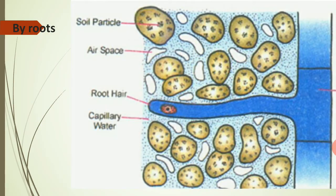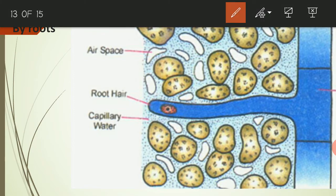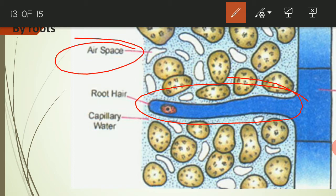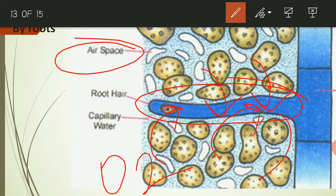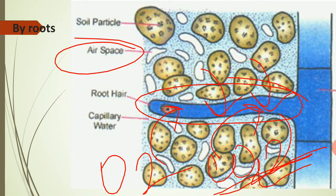Respiration also occurs through root hairs. Root hairs penetrate into the spaces between soil particles. The space between soil particles is the air space, and it is filled with oxygen molecules. So the oxygen molecules enter the root hairs by diffusion, and carbon dioxide is released back into the soil. In that way, plants perform respiration through root hairs.